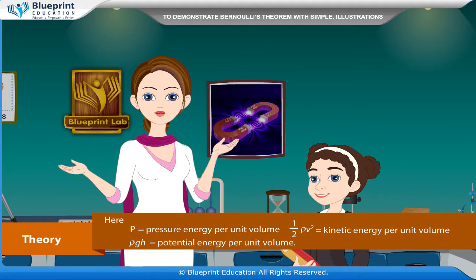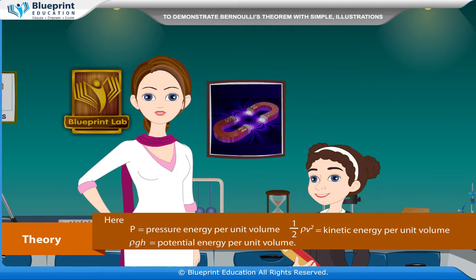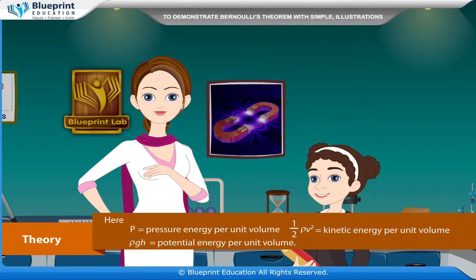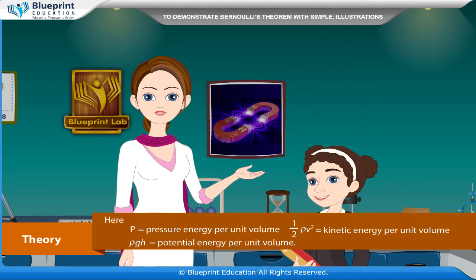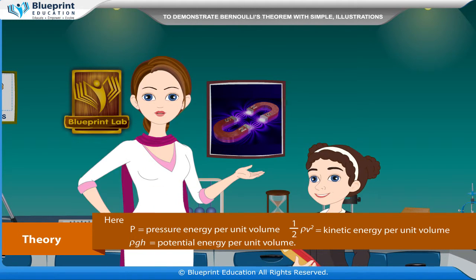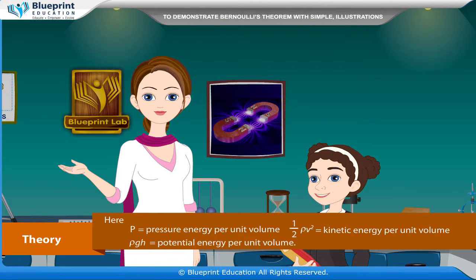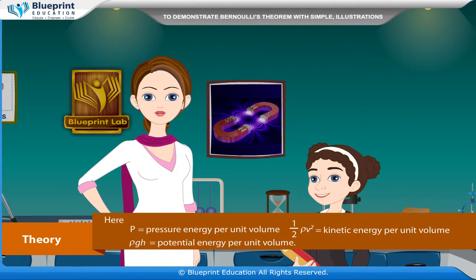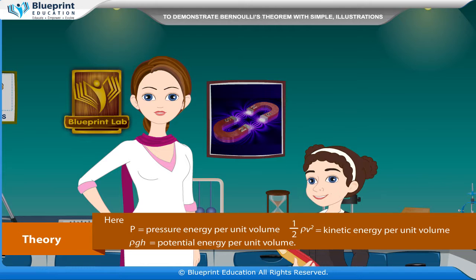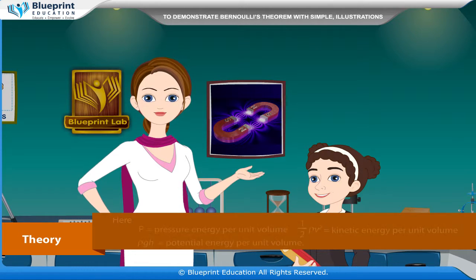Here, p is equal to pressure energy per unit volume. Half rho v square is equal to kinetic energy per unit volume. Rho g h is equal to potential energy per unit volume.